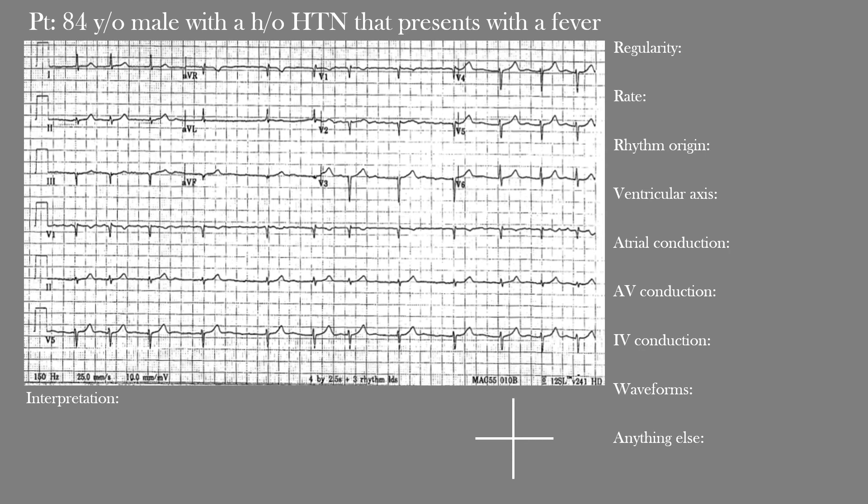Then we'll look at the rhythm's origin — where is the rhythm actually starting from within the heart? Then we have to find the ventricular or QRS axis, which could help us with our differential diagnosis. Then there's the atrial-ventricular (AV) and intraventricular (IV) conduction, looking at whether the conduction is normal or not. Then we'll look at the waveforms, which include all the waves, segments, and intervals, and lastly anything else we may have missed.